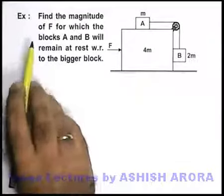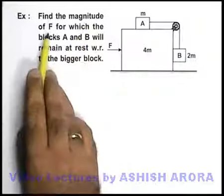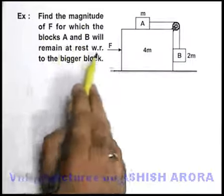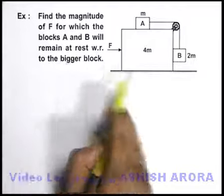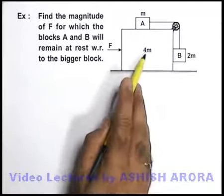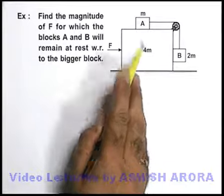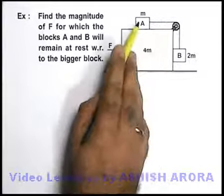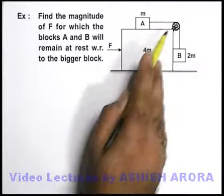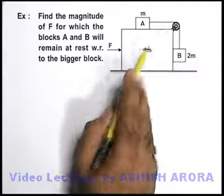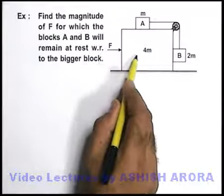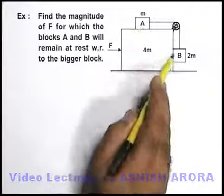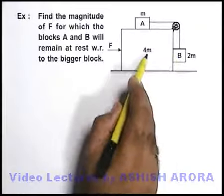In this example, we are required to find the magnitude of F for which the blocks A and B will remain at rest with respect to the bigger block. In the system there is a bigger block of mass 4m on which 2 blocks of masses m and 2m are supported. They are also connected via a string passing over a pulley attached to the bigger block, and we are applying an external force F onto the bigger block.